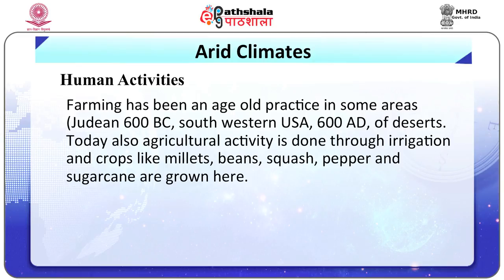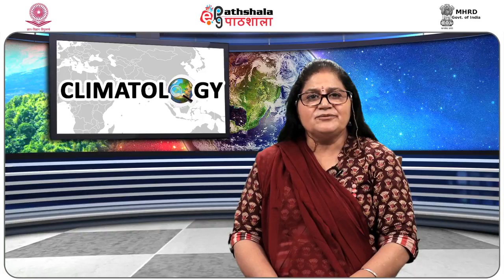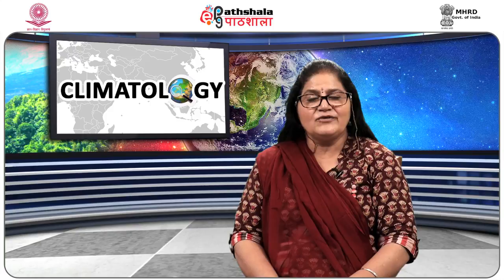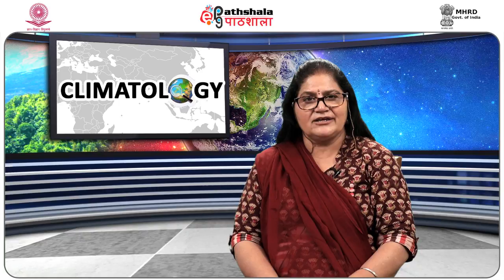Farming has been an age-old practice in deserts, dating to Judean settlements around 600 BC and southwestern USA around 600 AD. Today, agricultural activity is done through irrigation and crops like millets, squash, pepper and sugarcane are grown. In summary, the major determinant of dry climates is the amount of rainfall, which influences vegetation and ultimately animal and human life.